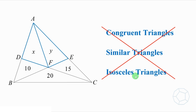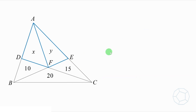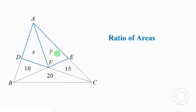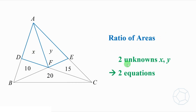It seems to be quite hard. However, as we have a lot of areas, we can talk about their ratios. It turns out to be the key idea to solve this problem. Moreover, to solve for the two unknowns X and Y, we need two equations. So the solving strategy is a combination of geometry and algebra. Let's check it out.